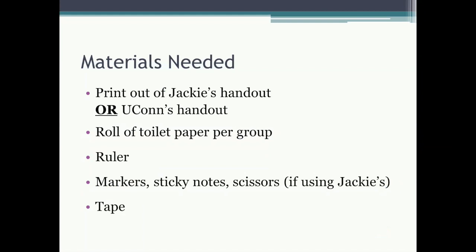In order to complete this activity, you'll need the following materials: a copy of either Jackie's handout or Yukon's handout, a roll of toilet paper per group of students, a ruler, markers, sticky notes, and scissors if you're using Jackie's set of instructions. And finally, scotch tape.